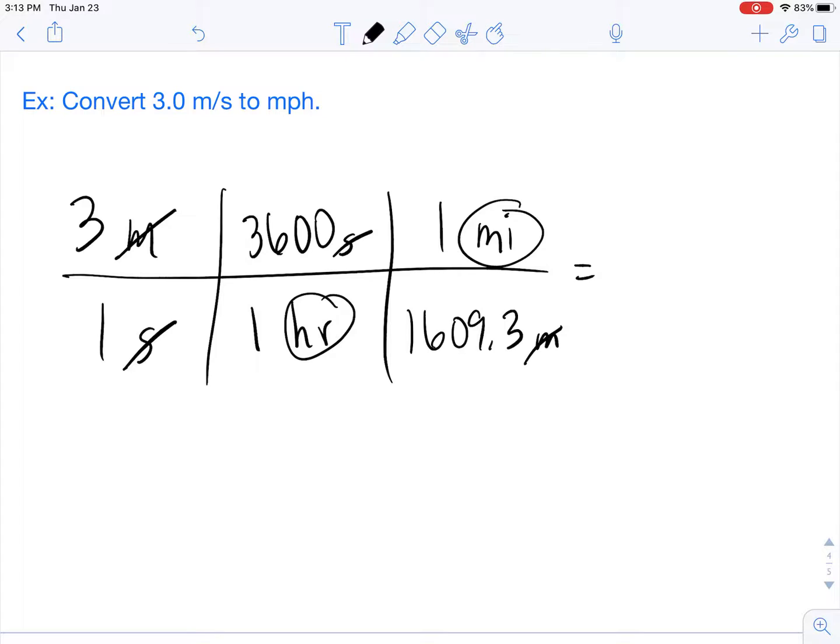We're going to do 3 times 3,600, which ends up being 10,800. That would be miles divided by 1,609.3 hours.